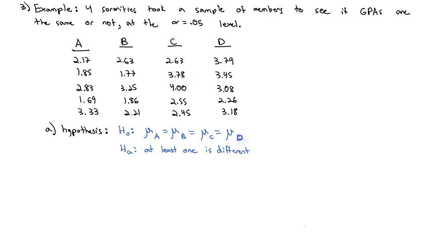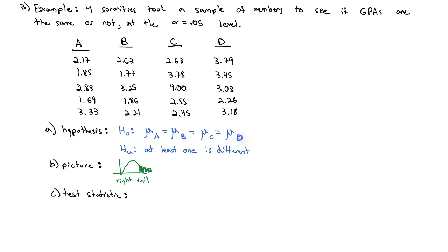We don't know if it's higher or lower, we don't know which one is different, we don't know if they're all different — we just want to know if at least one is different. If we were to draw a picture of this solution, we know the F-distribution is going to be a right-tail test, because the F-distribution always puts us in the right tail for the ANOVA. Then we can calculate our test statistic F.